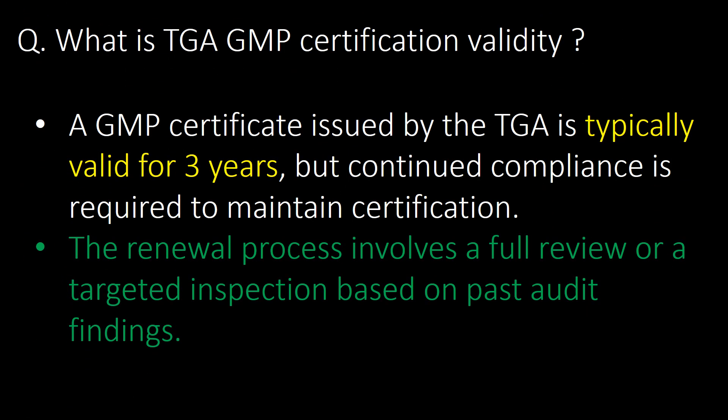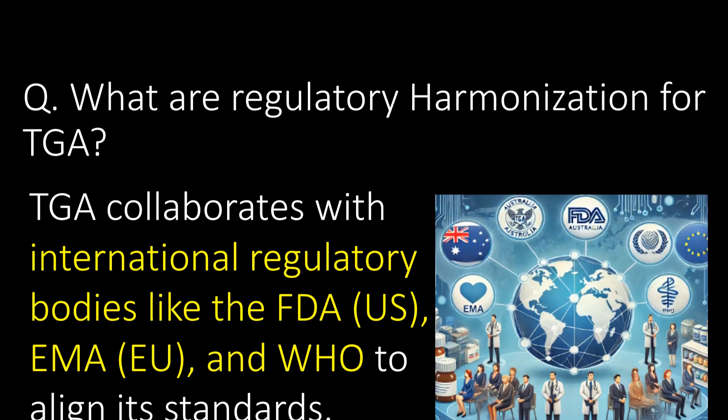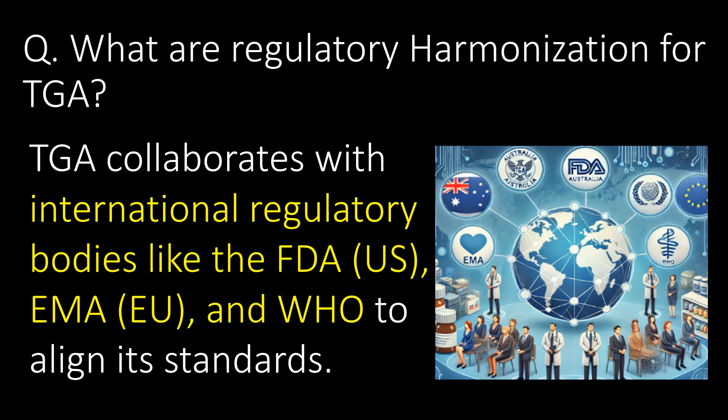What is TGA GMP certification validity? A GMP certificate issued by the TGA is typically valid for three years, but continued compliance is required to maintain certification. The renewal process involves a full review or a targeted inspection based on past audit findings.